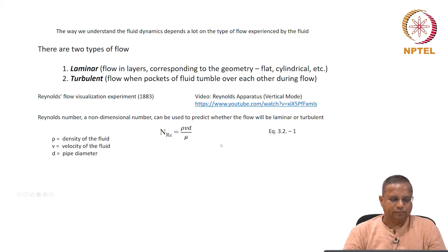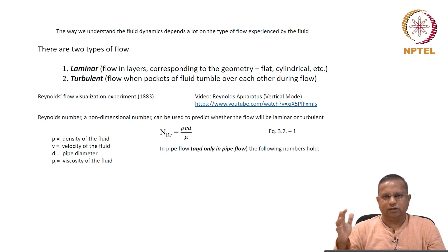If the Reynolds number happens to be less than a certain value, then laminar flow would occur. If it is higher than a certain value, then turbulent flow occurs. If we increase the velocity for a given geometry and given fluid, then the flow will move from laminar to turbulent. The layers will start intermingling to give you turbulent flow later.